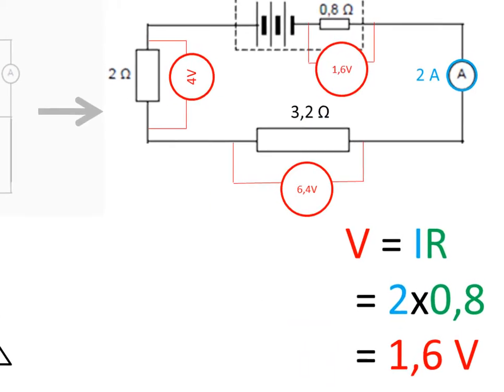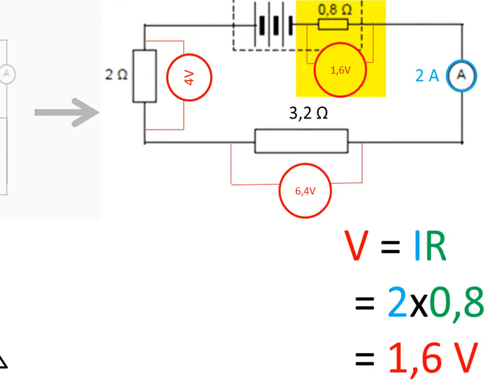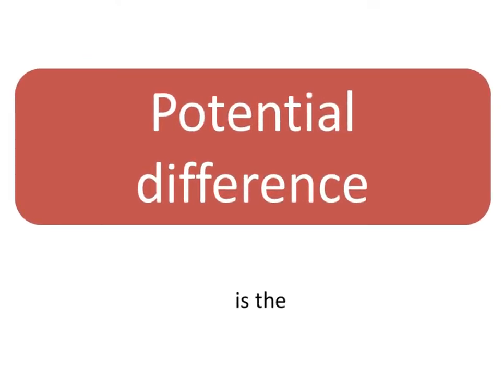The potential difference across the battery internal resistance is often called lost volts, and that equals 2 amperes multiplied by the battery internal resistance of 0.8 ohms equals 1.6 volts.